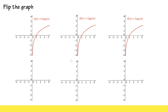In my previous video, I talked about how to shift the graph of a function, and that's also called function translations. In this video, we're going to talk about how to flip the graph of a function. We're using the graph for the function f(x) = log base 2 of x, and there are three kinds of flips that we have to pay attention to. We also have to study the equations that go with each one.